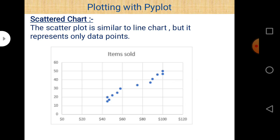The third chart type is scatter chart. A scatter chart is basically similar to the line chart, but it represents only data points. In line charts we connect different data points, but in scatter chart there is no need to connect data points. A scatter chart is a collection of different points that are not connected to each other - this is the basic difference between line chart and scatter chart.